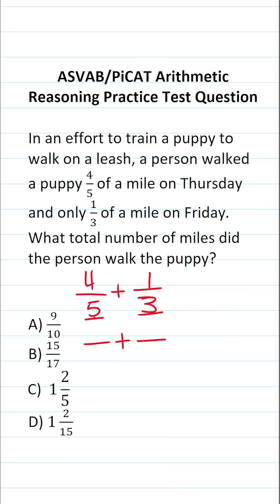So what number do both five and three go into? As it happens, they both go into 15. So I'm going to rewrite these with a common denominator of 15. To make five into fifteen, I would have to multiply it by three, and I'm also going to do that to its numerator. Three times four is 12.